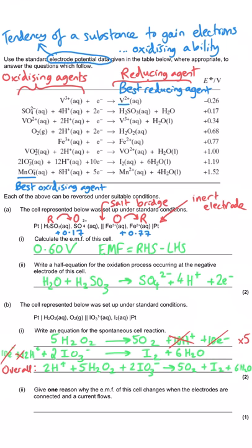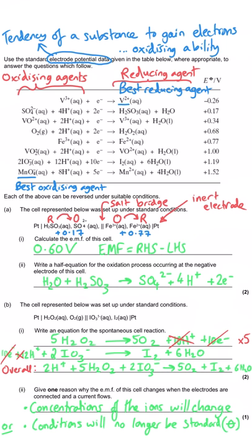The final question on this page asks: give one reason why the EMF of this cell changes when the electrodes are connected and a current flows. The answer is that the concentrations of the ions change once the electrochemical cell is used to generate a current. That means conditions are no longer standard conditions, so the electrode potentials change, and when those change, the EMF changes. For one mark you can say the concentrations of the ions are changing, or that they are no longer standard conditions — one molar solutions is standard conditions. By definition, EMF is determined when no current flows, so running a current contradicts that definition.